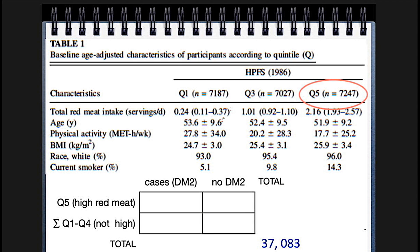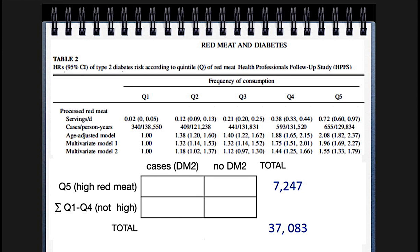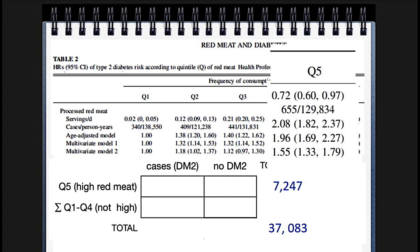These are all the red meat eaters — quintile five. We've broken subjects up by how much red meat they eat, and quintile five has all the heavy red meat eaters. Now we need to find out the cases — how many people really got sick. Looking at the left side, we magnify quintile five and find the cases. That number is 655. So in the group with all the big red meat eaters, there are 655 cases.